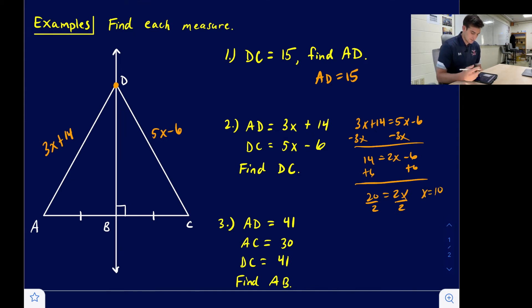So now we want to find DC. We're going to plug 10 in right there. So we get 5 times 10 minus 6, 50 minus 6, and we get 44. So DC equals 44.